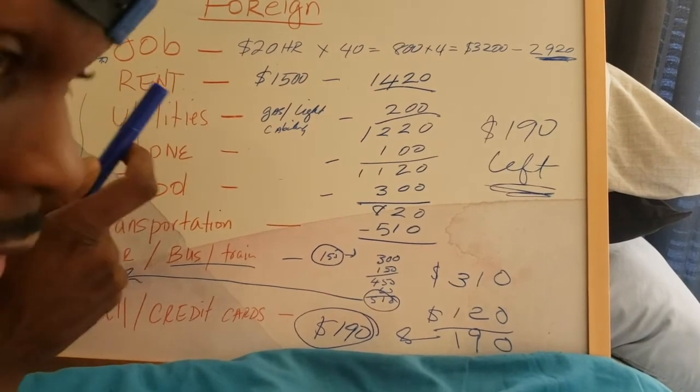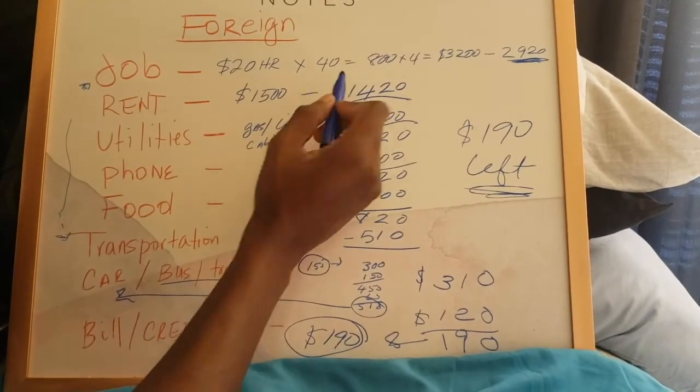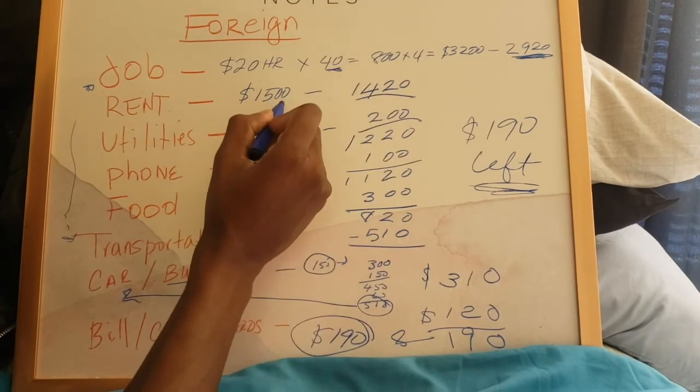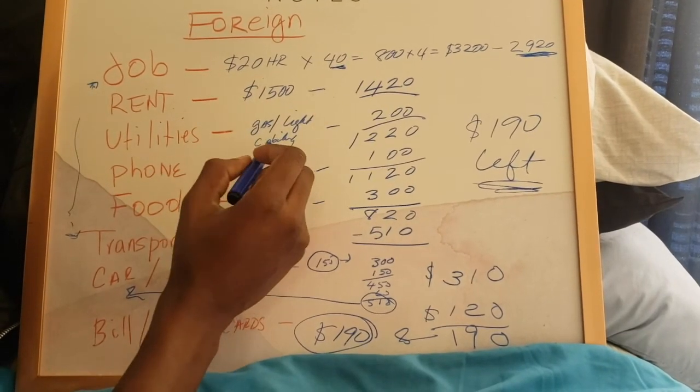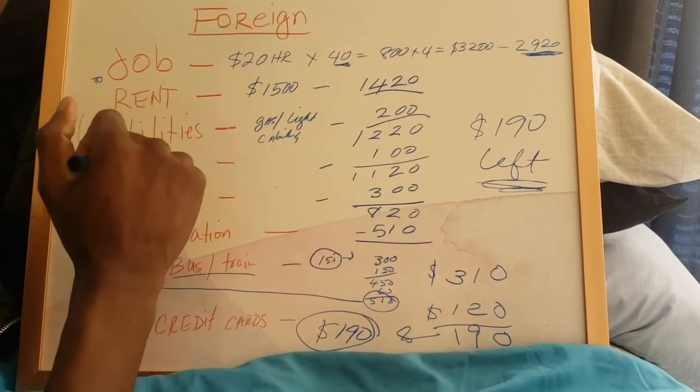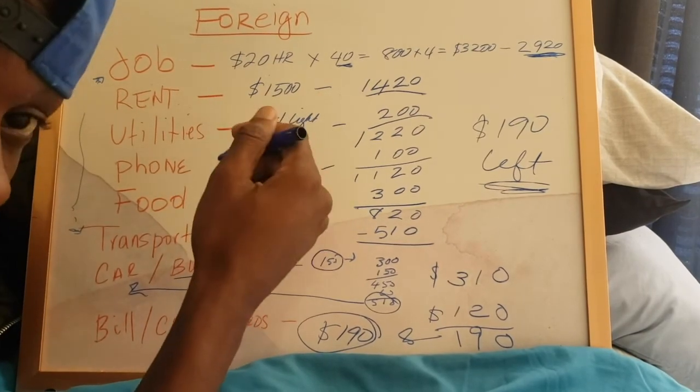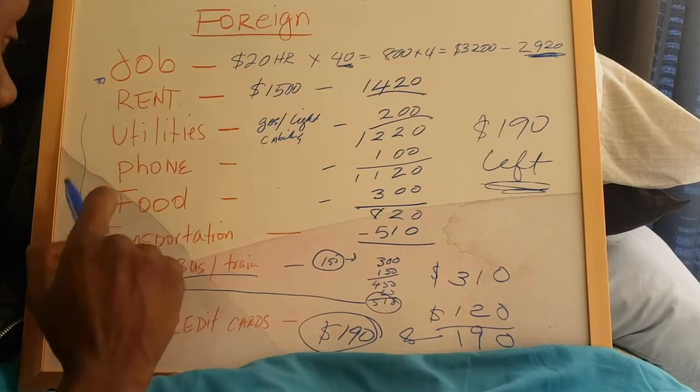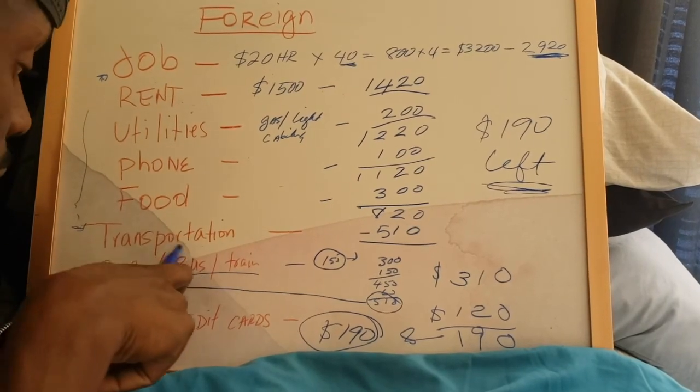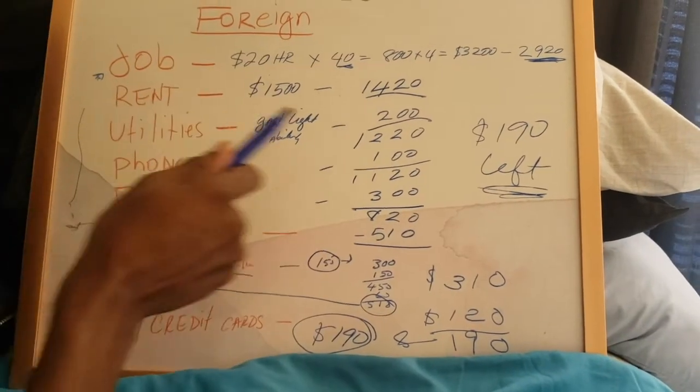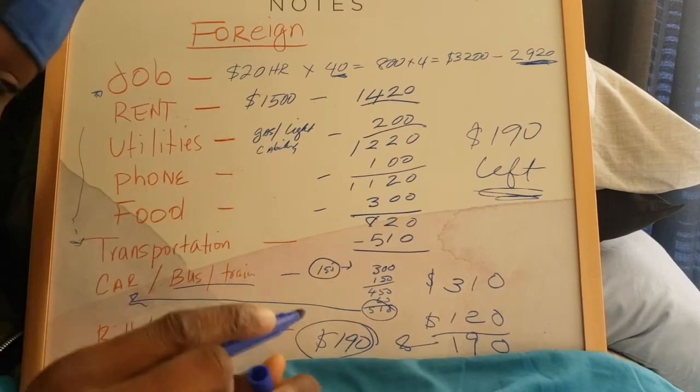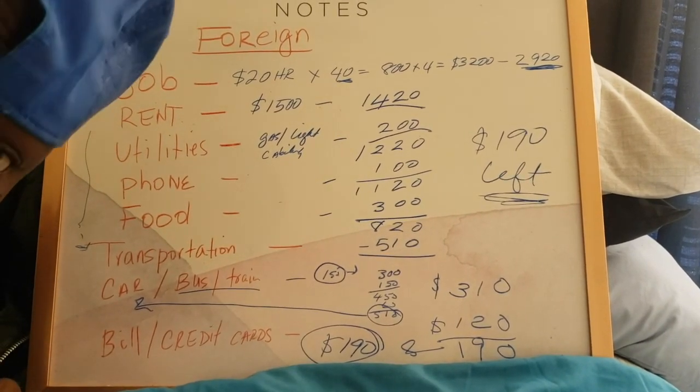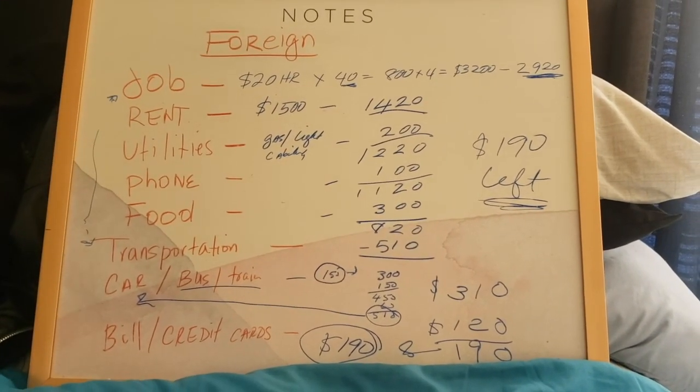Therefore, this is why people should be considerate. Because remember, this is an estimate. If you see up there, you might not get the 40 hours, you might get less. The rent might be more, the utilities might be more, you might have kids. And once you add more kids into the equation, it's more utilities, more phone bill, more food, more transportation. You understand? So go ahead and make a video and see how much you save versus how much we save and how much you have left.